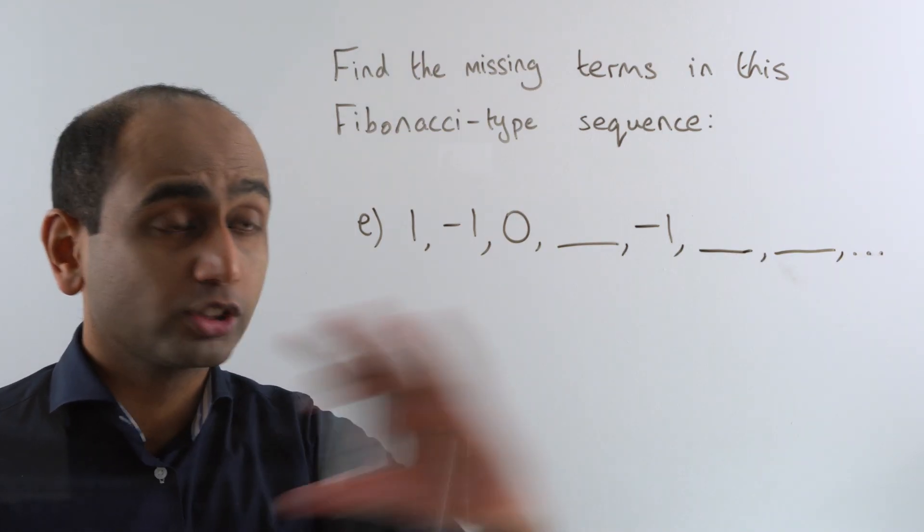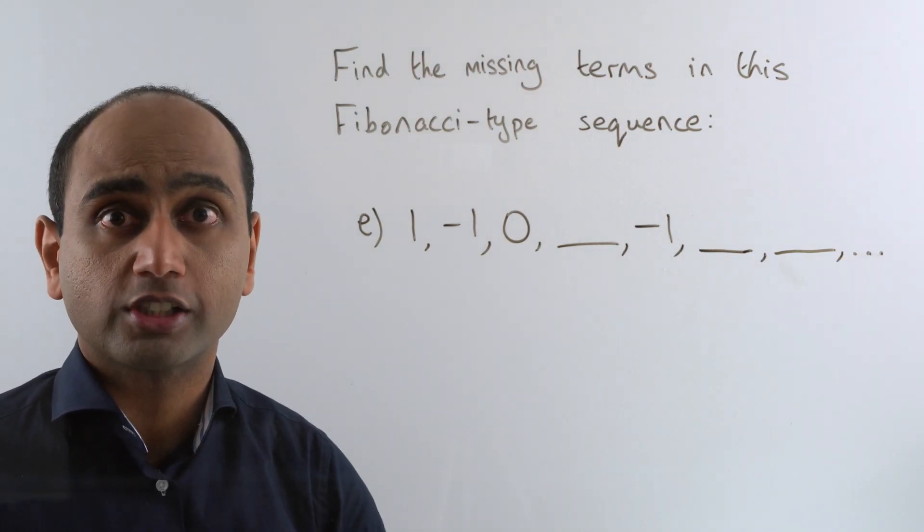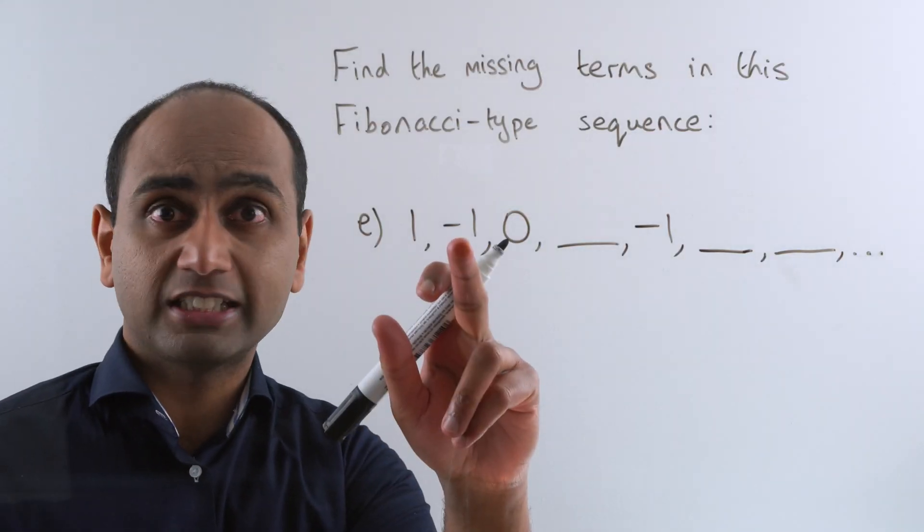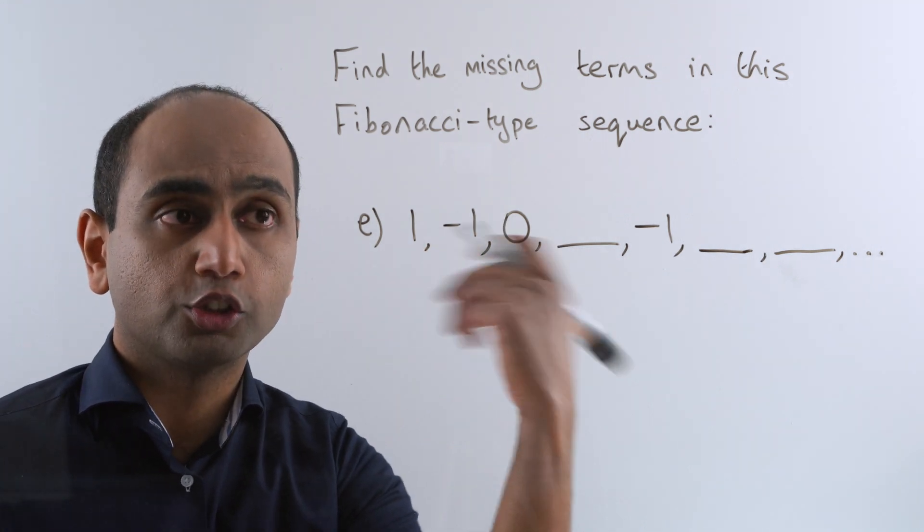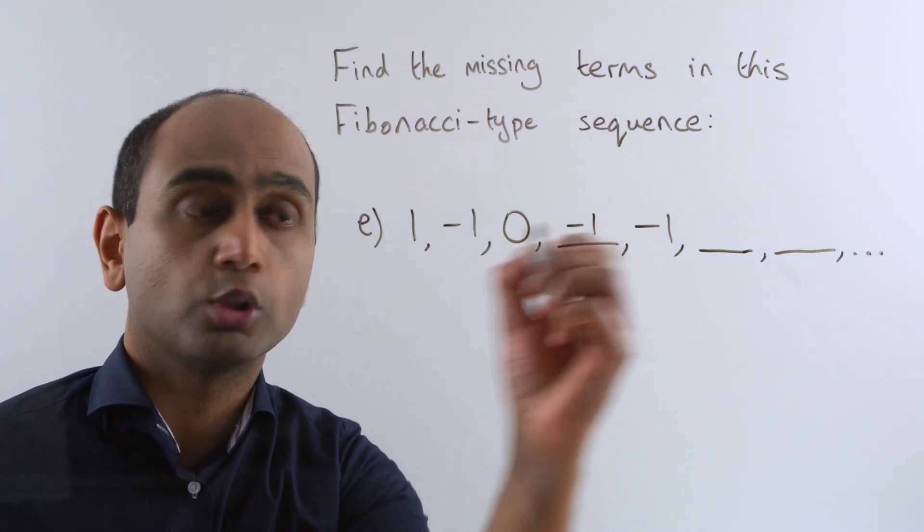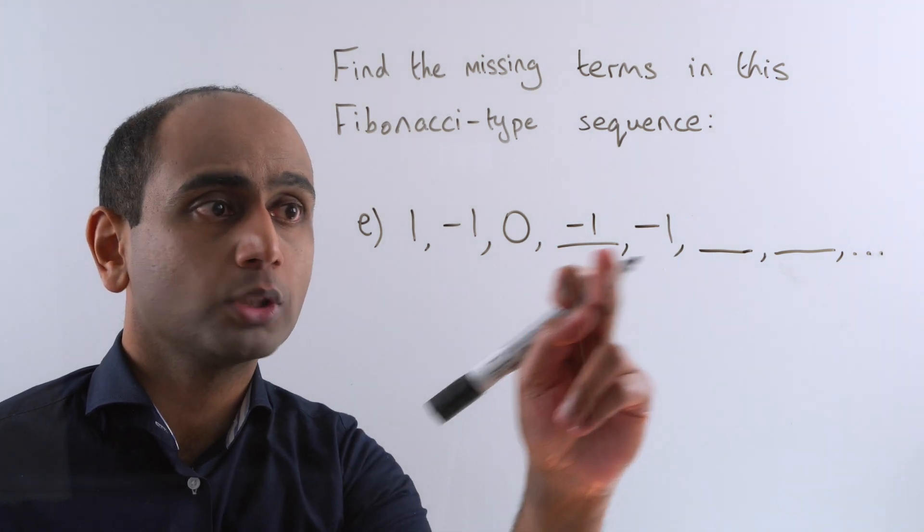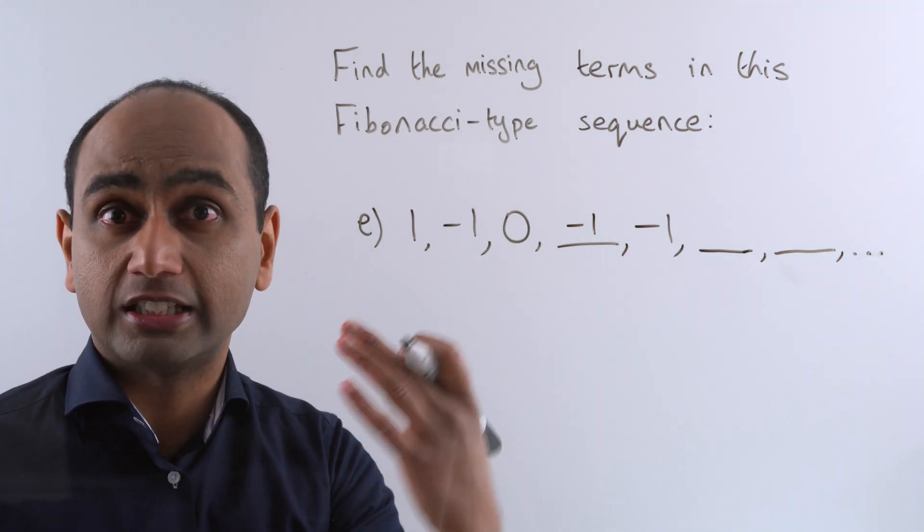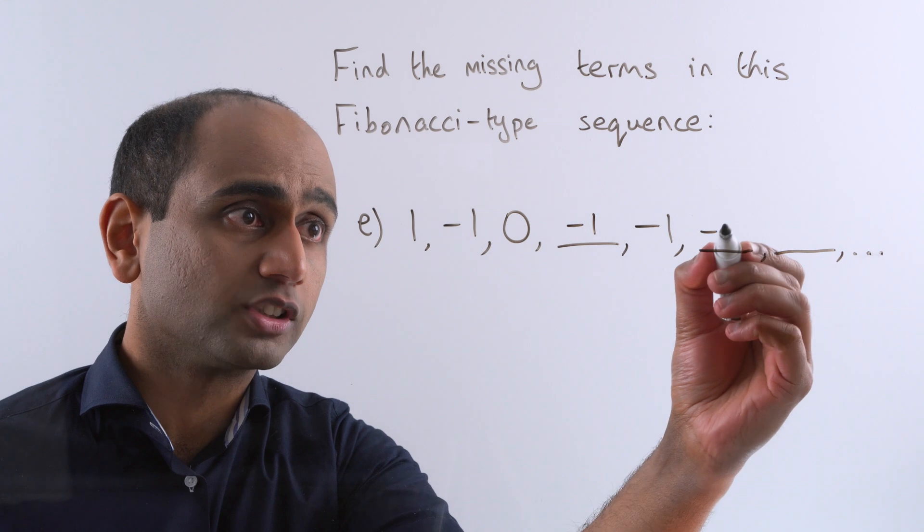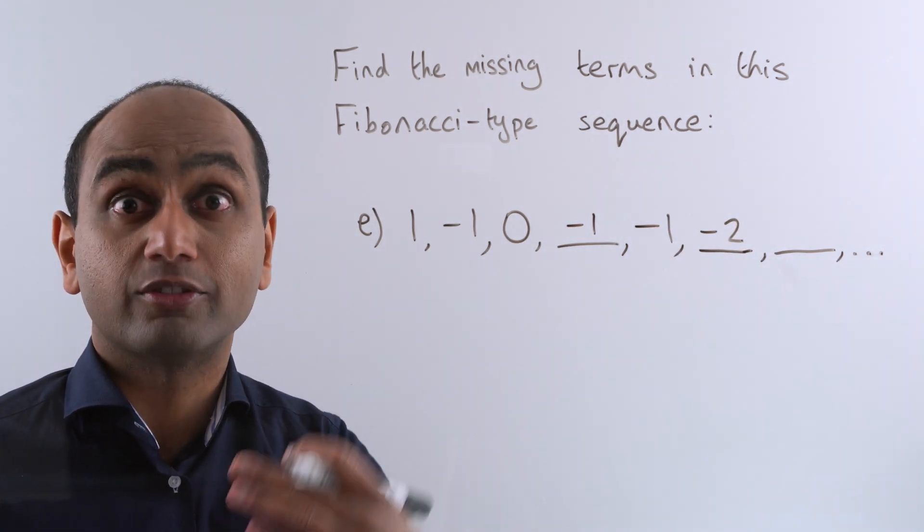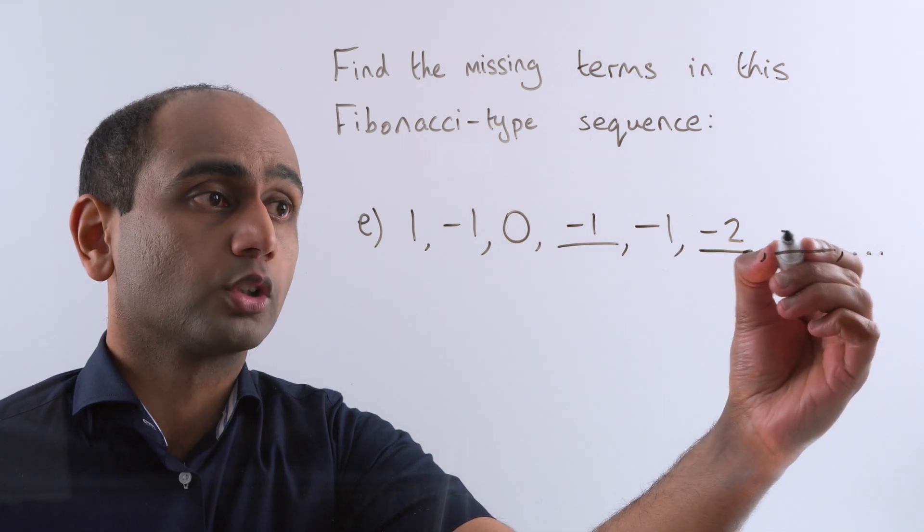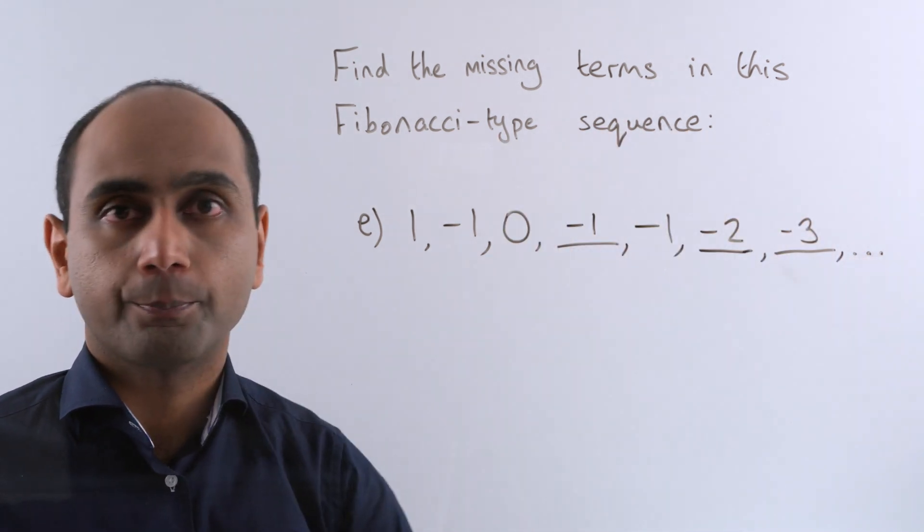Here's the next example. Pause the video and fill this one in for yourself. We've got 1 plus negative 1 giving us 0. Negative 1 plus 0 should give us negative 1 so that's what goes in there. Negative 1 plus negative 1 gives us negative 2 so that's what goes in there. Negative 1 plus negative 2 is negative 3.